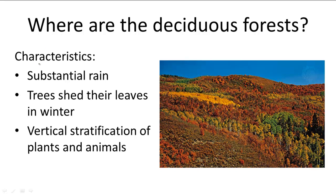In brief summary, the deciduous forest biome receives substantial amounts of rain and changing seasons, their trees shed their leaves in the winter, and there's a unique vertical stratification of plants and animals.